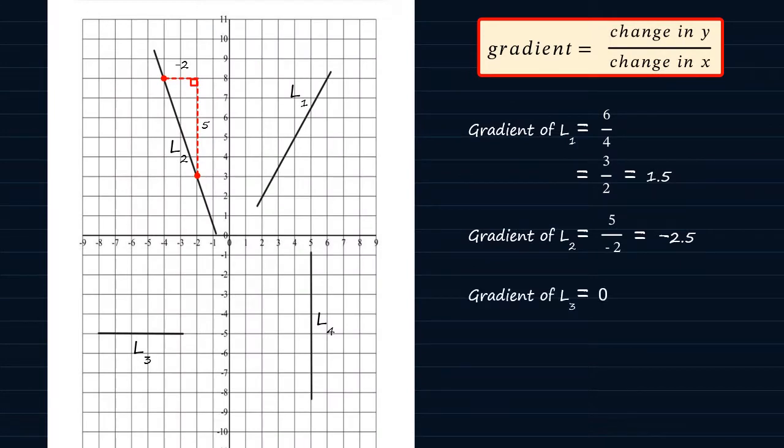The last one is the line L4. The line L4 only has a vertical displacement, but the horizontal displacement change in x is zero. This makes the gradient of the line L4 undefined. So we say, if a line is vertical, its gradient cannot be specified, or rather, it is undefined.